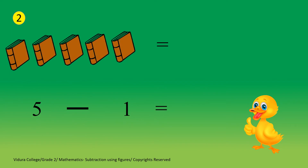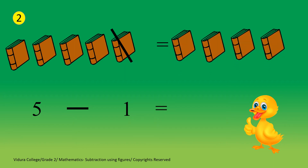Question number 2. There are 5 books and we need to take out 1 book away out of 5 books. Let's strike out and find the remaining number of books. We strike out 1 book and the answer is 4 books. 5 minus 1 equals 4.